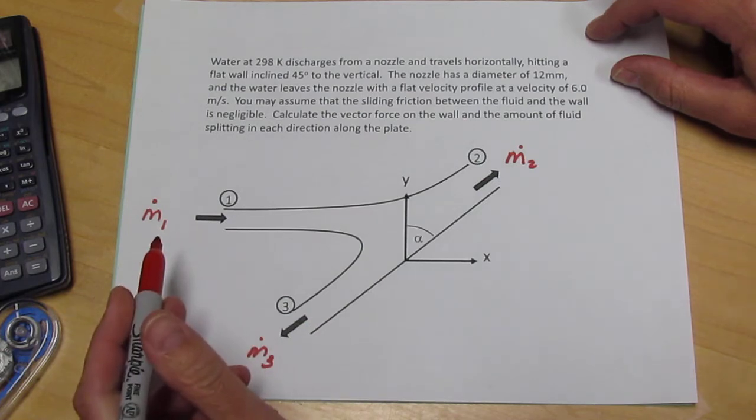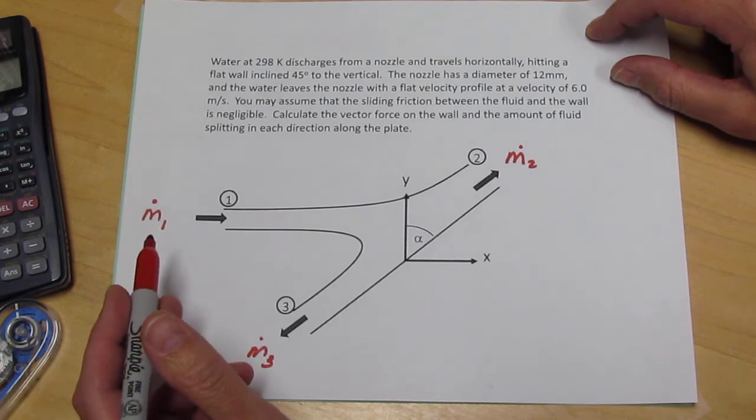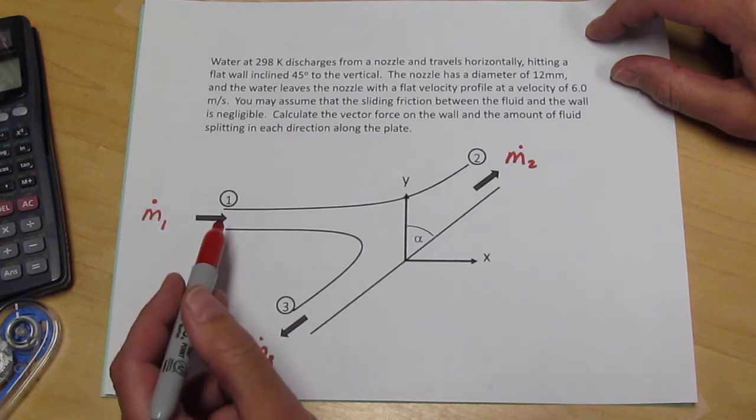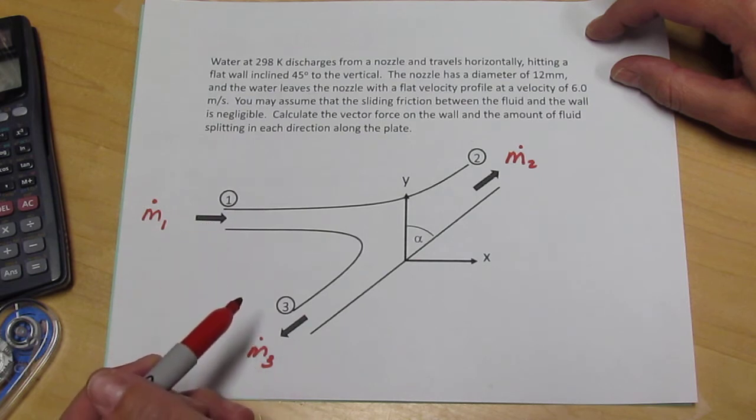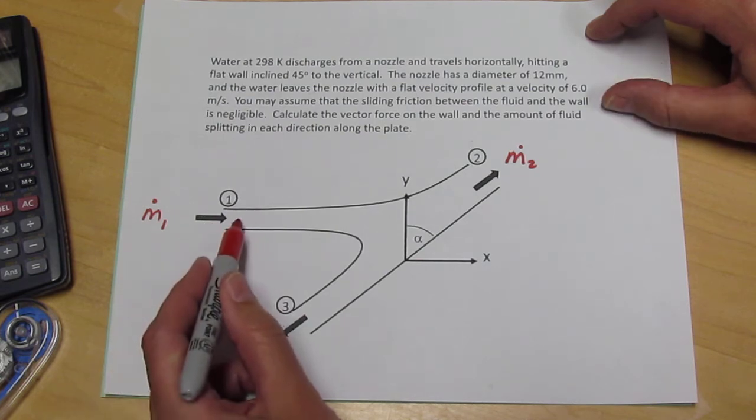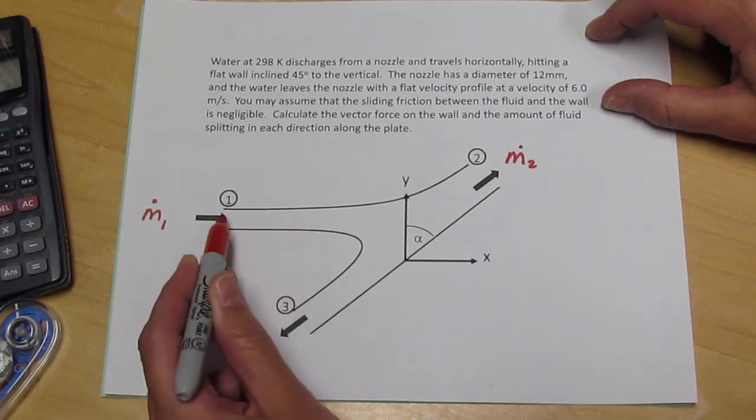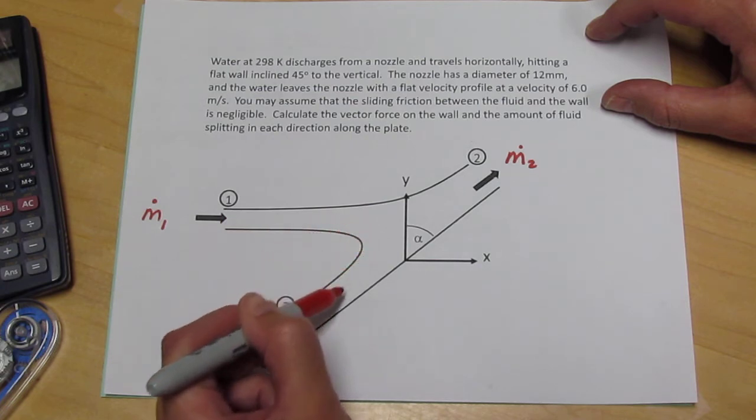Normally we use the mechanical energy balance to find things like pressures and velocities. But actually we can get some interesting information from the mechanical energy balance if we consider streamlines that enter one location and exit one location.